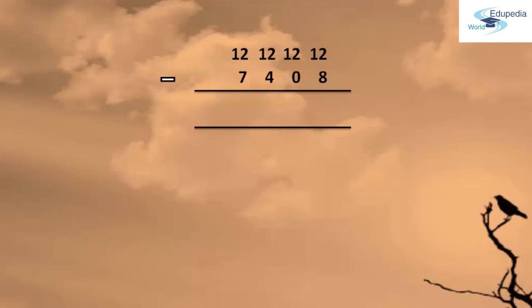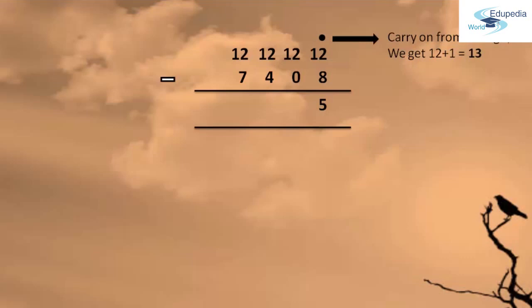In Step 7 there is a carry-on of 1 which should be added. So 12 with a carry of 1 gives 13. 13 minus 8 gives 5. Then 12 minus 0 gives 12, but since 12 is two digits, we write only 2 and carry 1 to the next. So 12 plus 1 gives 13, and 13 minus 4 is 9. Then 12 minus 7 gives 5.